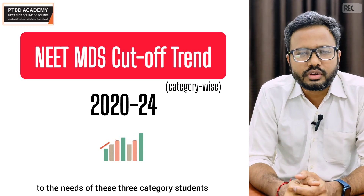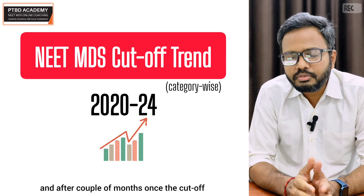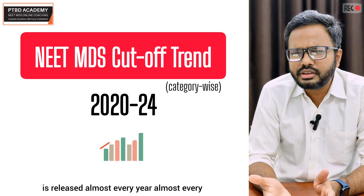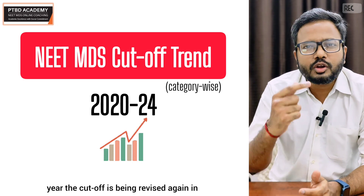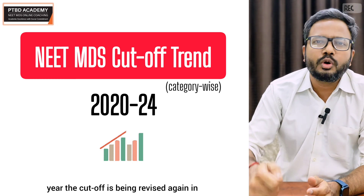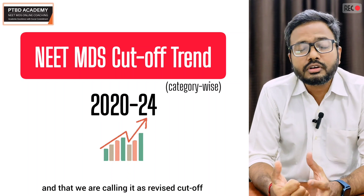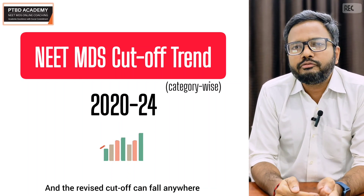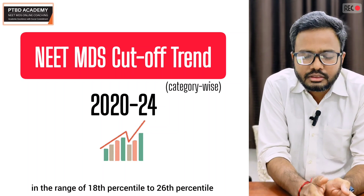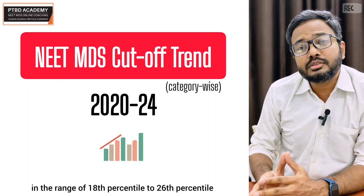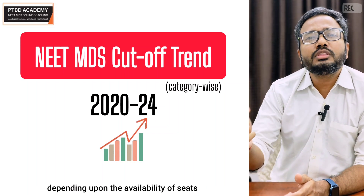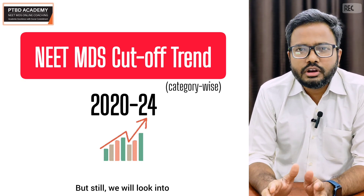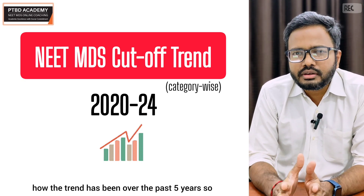Every year the cutoff is released catering to the needs of these three category students, and after a couple of months the cutoff is revised again in order to fill up the seats — we call this the revised cutoff. The revised cutoff can fall anywhere in the range of the 18th percentile to the 26th percentile, depending upon the availability of seats and other criteria.